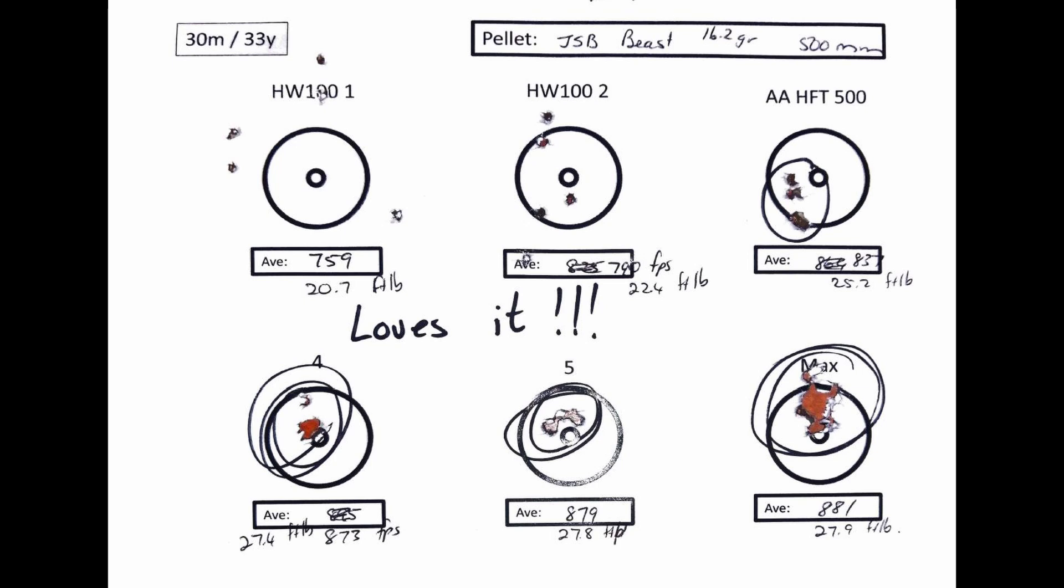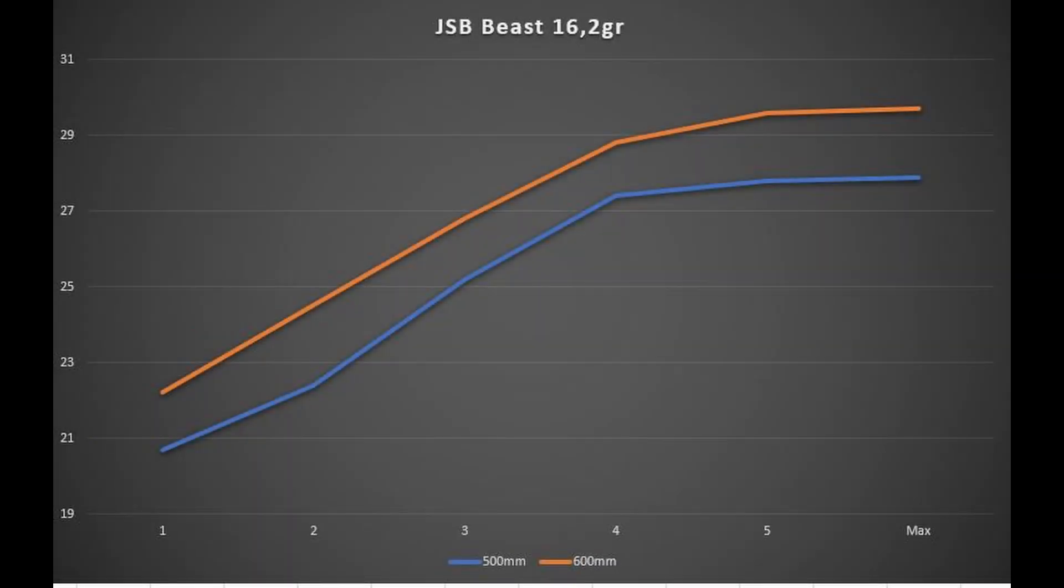Let's quickly have a look at the power output graph between the 500 millimeter and the 600 millimeter. And as you can see again, there's a massive difference between the two barrels. So if you want that a little bit more power, a little bit more speed, opt for a longer barrel.